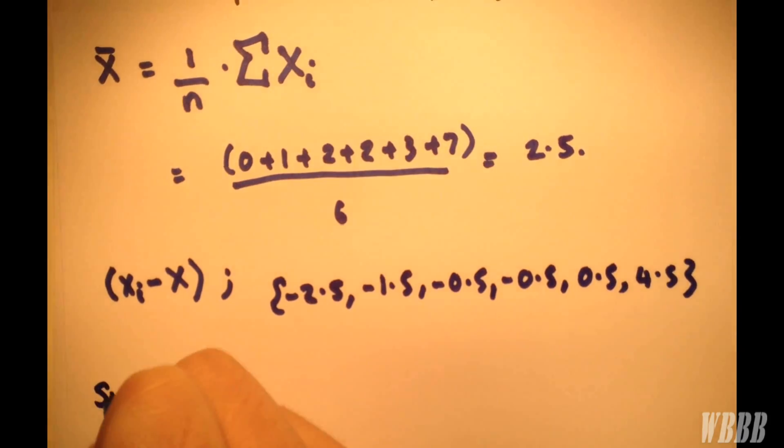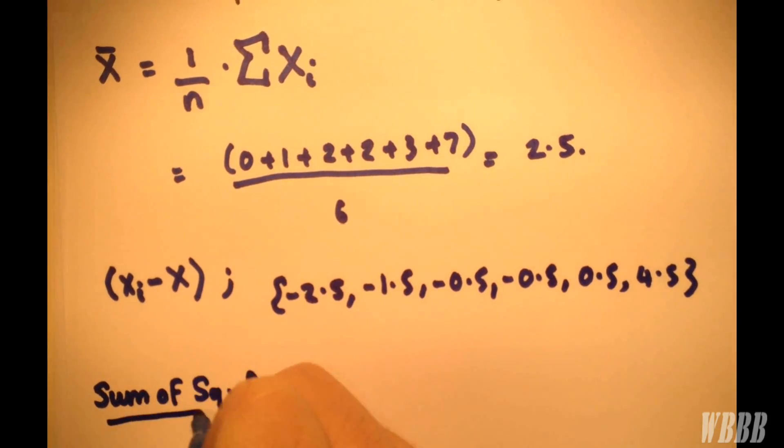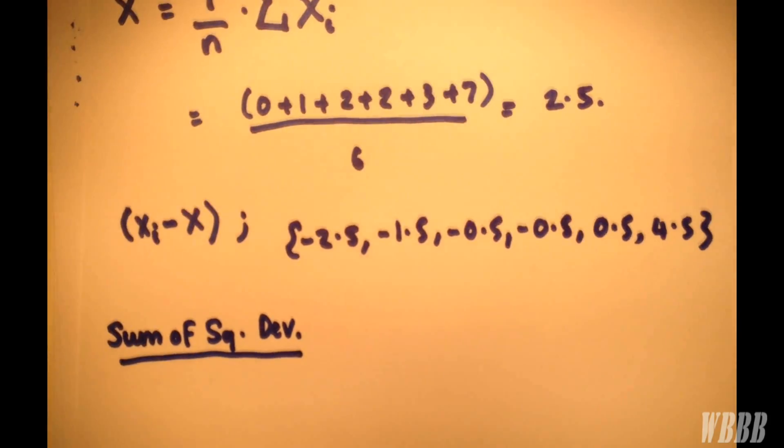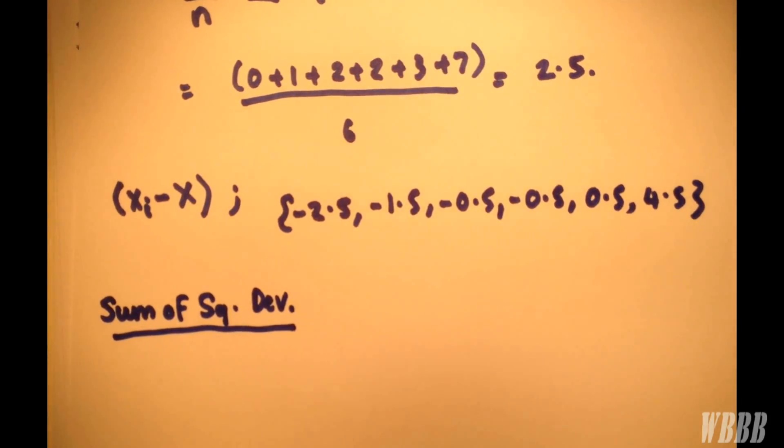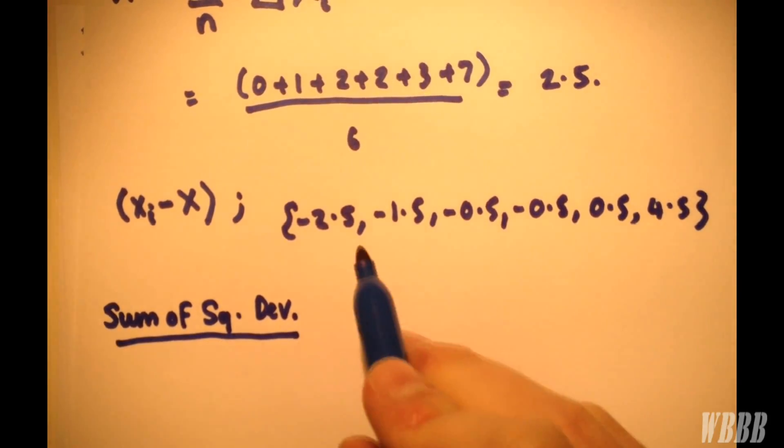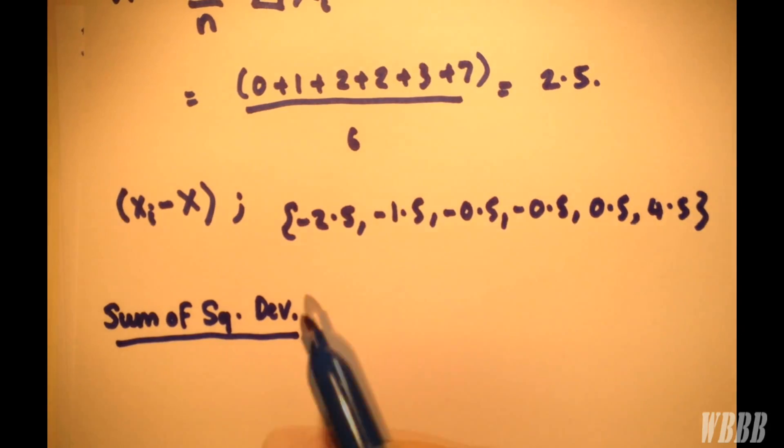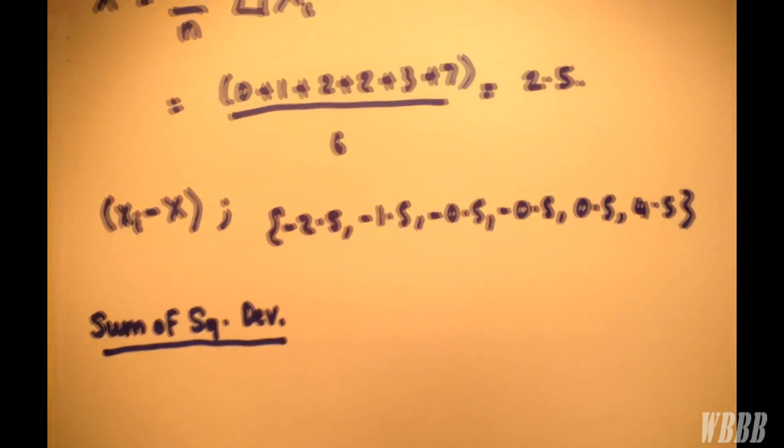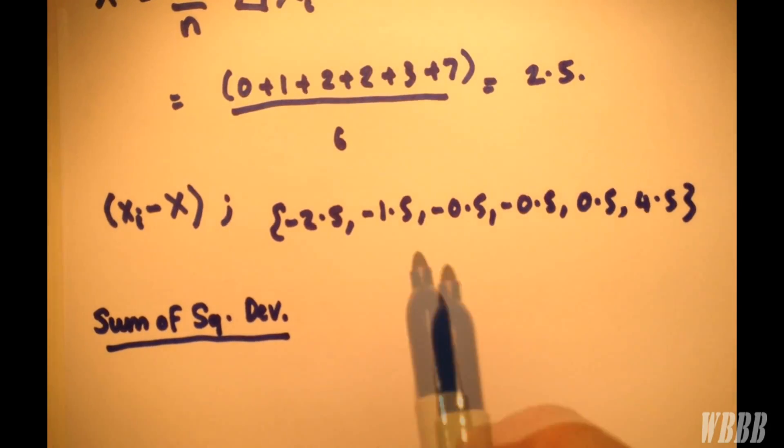And then we have the sum of squared deviations. Now, the sum of squared deviations is simply taking all of these deviations here from the mean and squaring them so that we have positive values and we actually have some kind of number to play around with. Because if we don't square them, these simply equal 0.